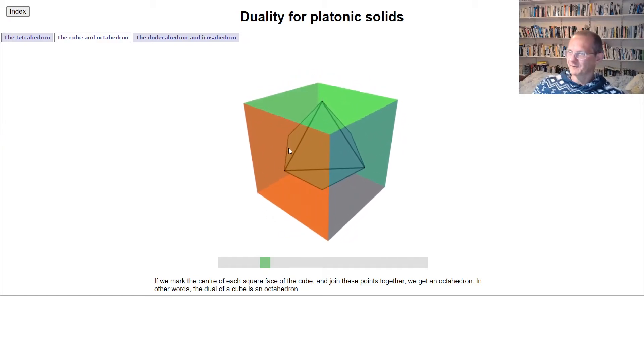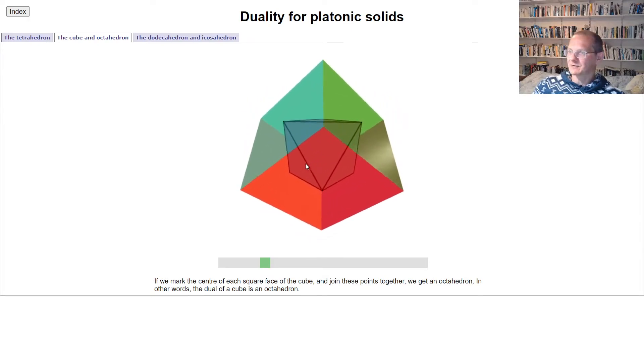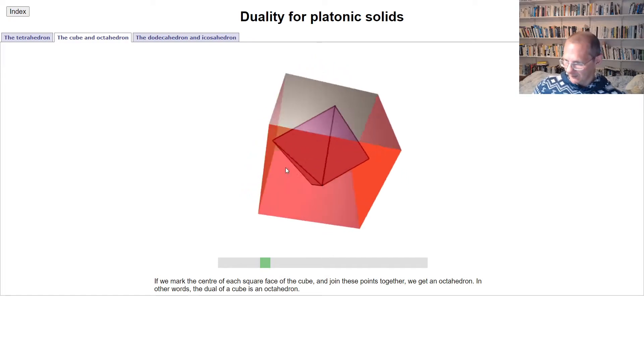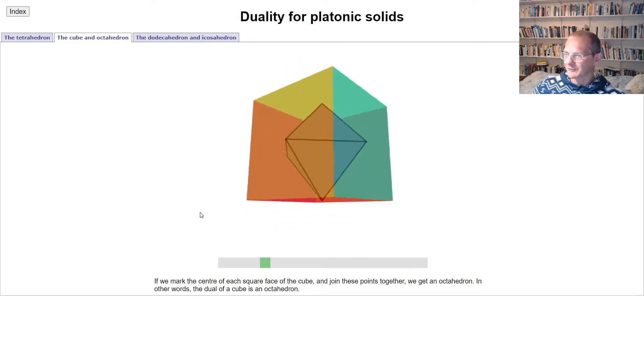we get one of these faces of the octahedron. So for each vertex of the cube, we get a face of the octahedron, giving eight vertices of the cube and eight faces of the octahedron like that.